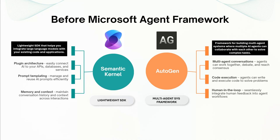You would use Semantic Kernel when you need to connect AI to your existing systems — like adding a chatbot to your e-commerce site that can check inventory, process orders, and answer customer questions by connecting to your database and APIs. It shines at plugin architecture, prompt templating, memory, and context.